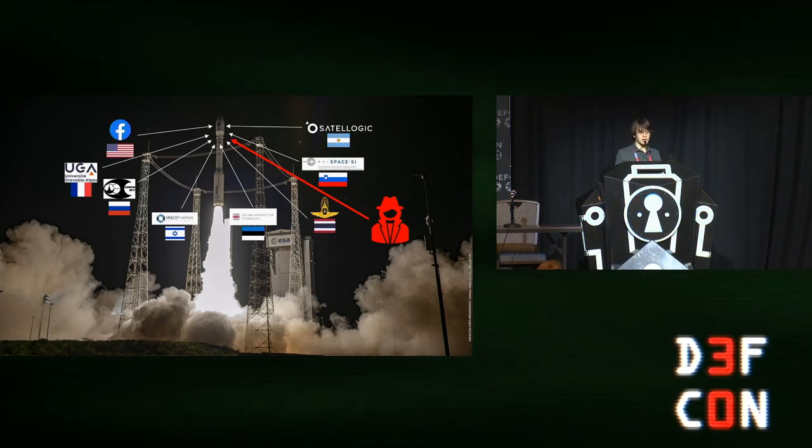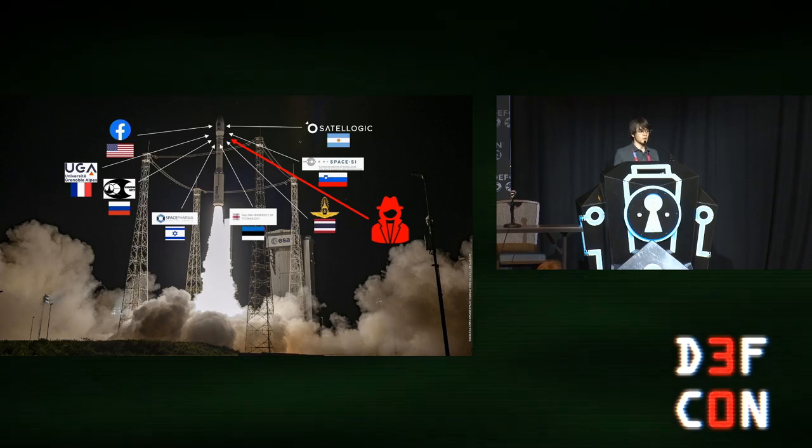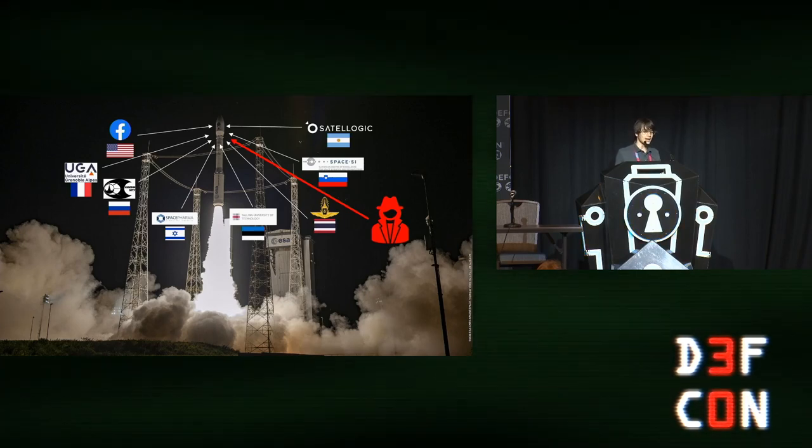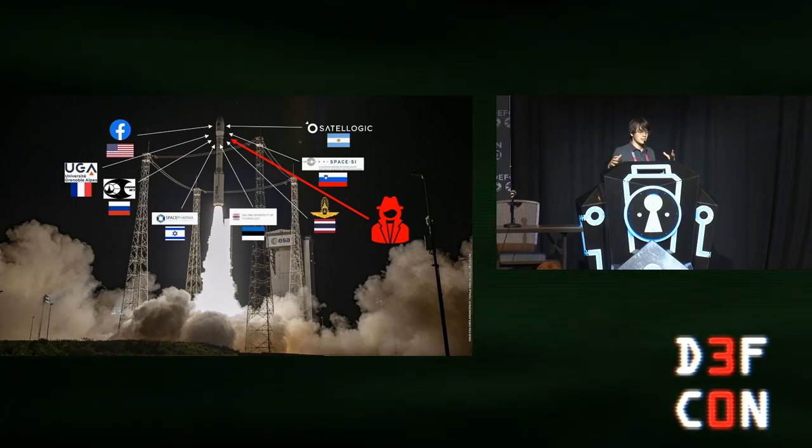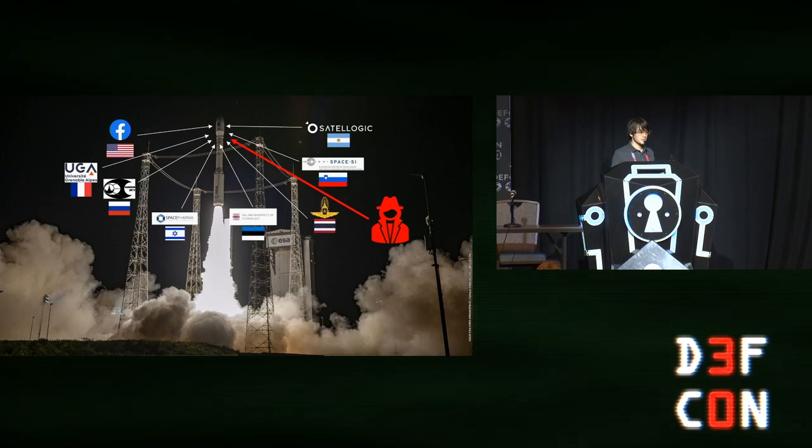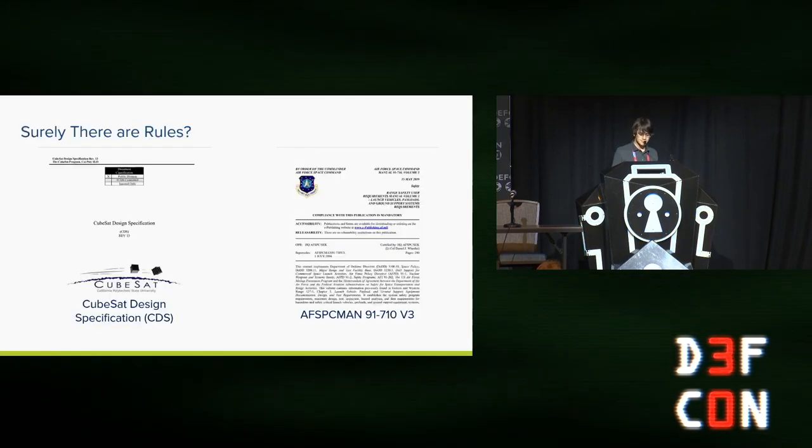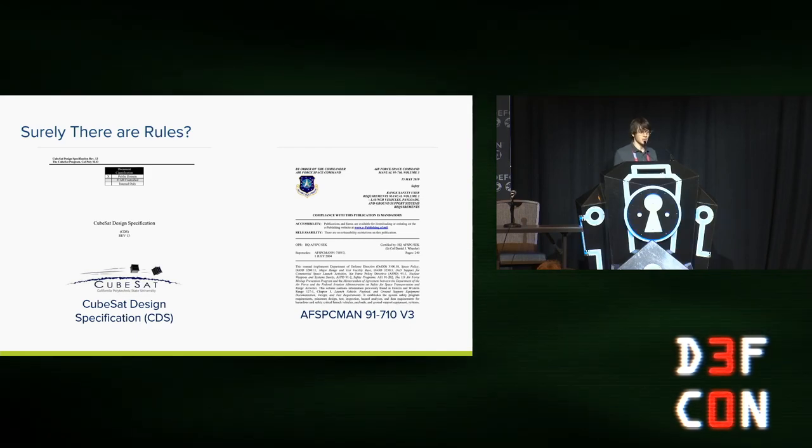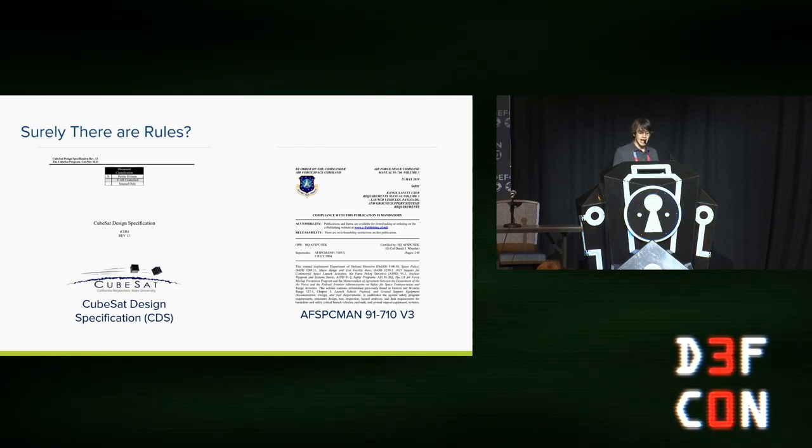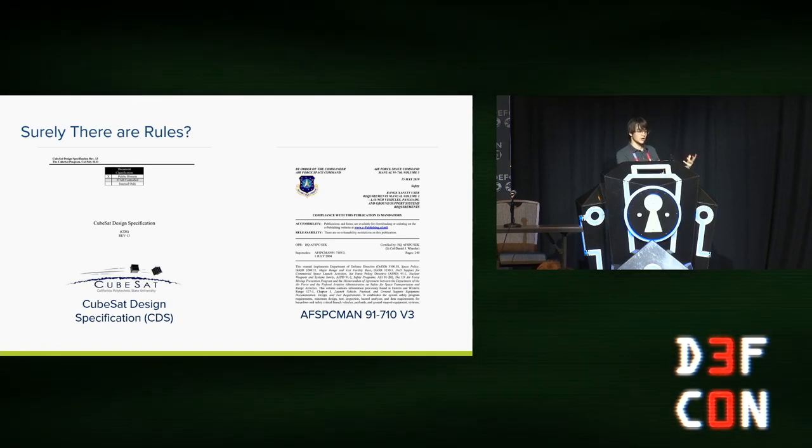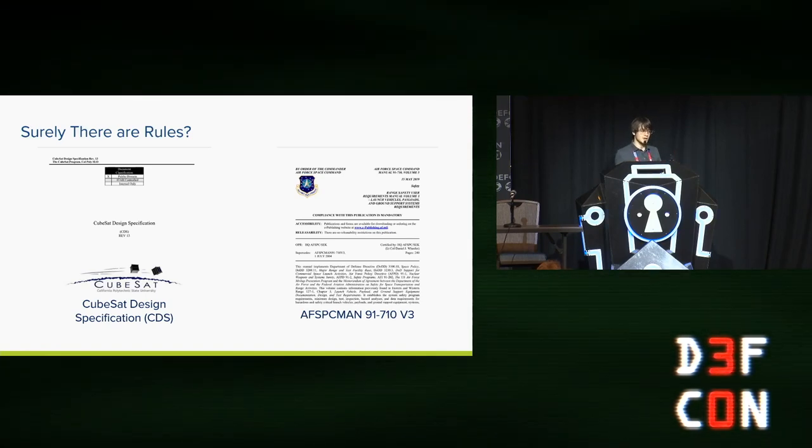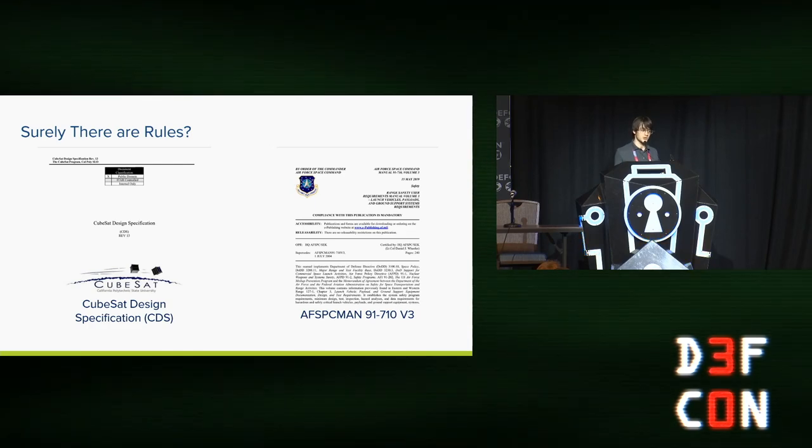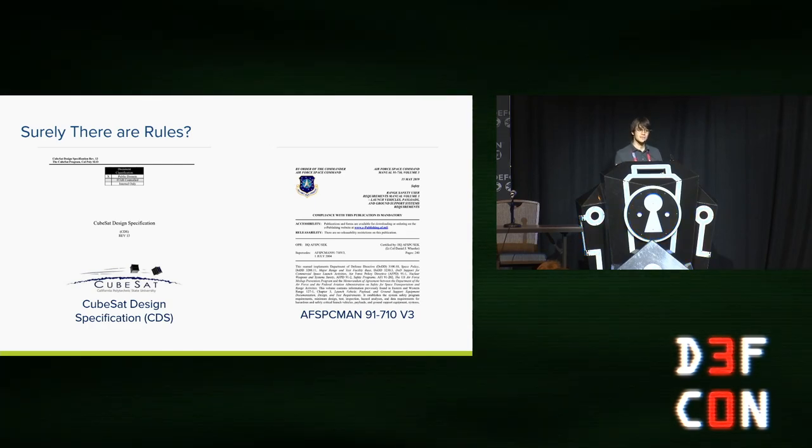There are safety controls on rocket launches that try to make CubeSats and secondary payloads not threaten the overall mission. In the U.S., the dominating documents for this are something called the CubeSat Design Specification, which dictates how CubeSats and small satellites should look and behave, and the Air Force Space Manual, which dictates how rocket launchers should behave and how secondary payloads should keep them safe.